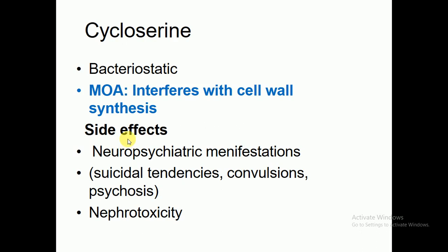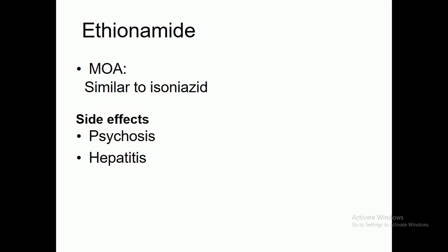The mechanism of action of cycloserine is that it interferes with cell wall synthesis. This drug directly blocks cell wall synthesis in order to stop the growth of microorganisms responsible for tuberculosis — that is, Mycobacterium. Side effects reported include neuropsychotic manifestations, suicidal tendency, convulsions, psychosis, and nephrotoxicity.